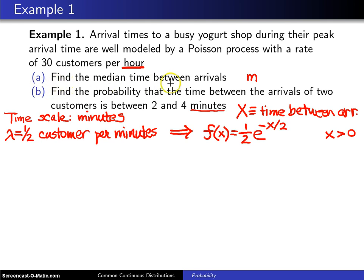To solve part a, and that is find the median time between arrivals, what we want to do is set the cumulative distribution evaluated at m equal to one half and solve for m. The cumulative distribution function evaluated at m—you can go back to the CDF slide and you'll recognize that that is one minus e to the minus m over two—and that gets set equal to one half. To solve this for m you have to subtract one from both sides, then negate, then take the natural logarithm, and then multiply by negative two.